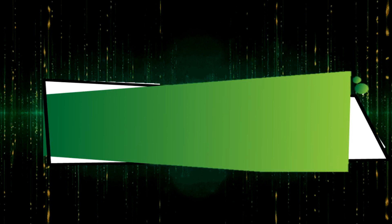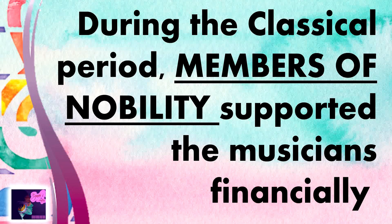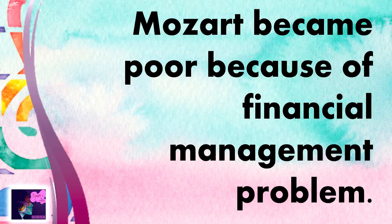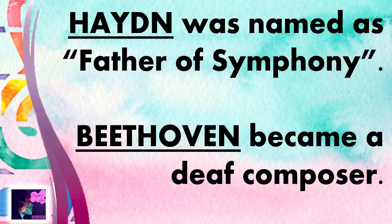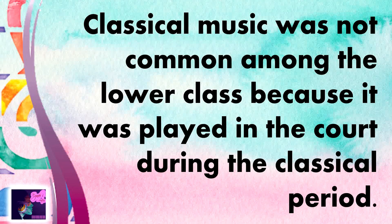Now it's time for a quick summary of what we've learned today. During the classical period, members of the nobility supported musicians financially — the aristocrats and noble people. Mozart became poor because of financial mismanagement. Haydn was named the father of the symphony, while Beethoven became a deaf composer. Classical music was not common among the lower class because it was played in the court during the classical period — classical music was mostly for the aristocrat and upper classes.